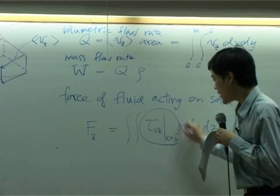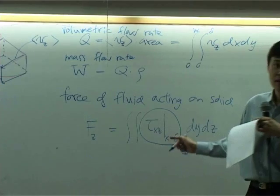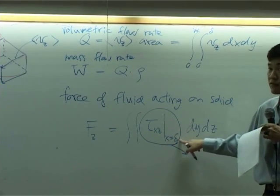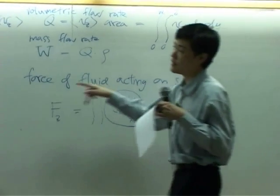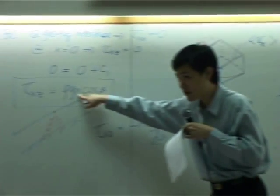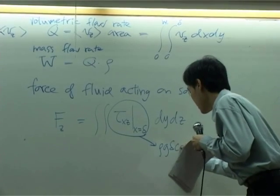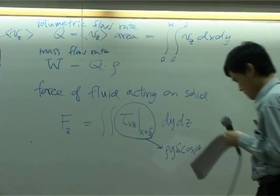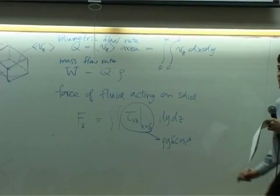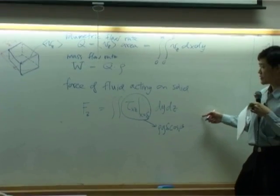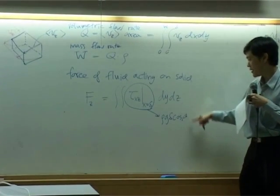So if you take this, consider as x equal to delta. That means x here is delta. So that becomes rho g delta cosine beta. Integration is very simple because there is no y or z in this equation.